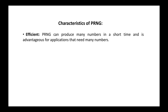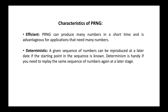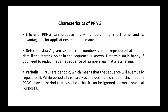The characteristics of pseudo random number generators include: first, efficiency — they can generate a large set of random numbers in a given time; second, deterministic — a given sequence of numbers can be reproduced at a later date if the starting point or seed value is known, which is handy if you need to replay the same sequence; third, periodic — since they use certain algorithms, they produce numbers that repeat after a certain period. However, modern PRNGs have periods so long that repetition can be ignored for most practical purposes.